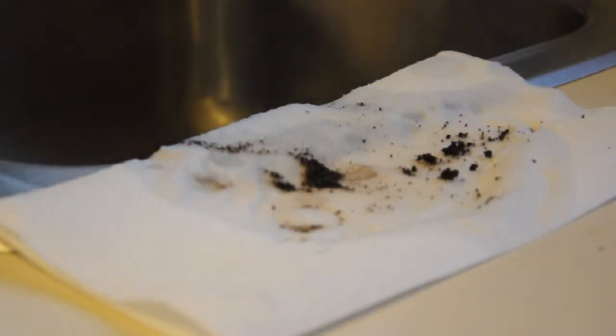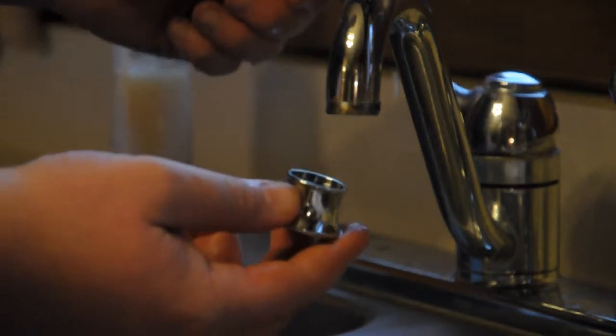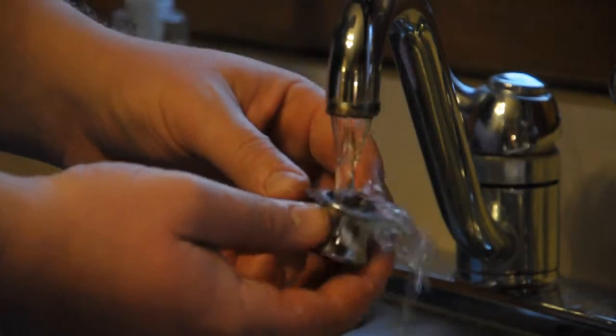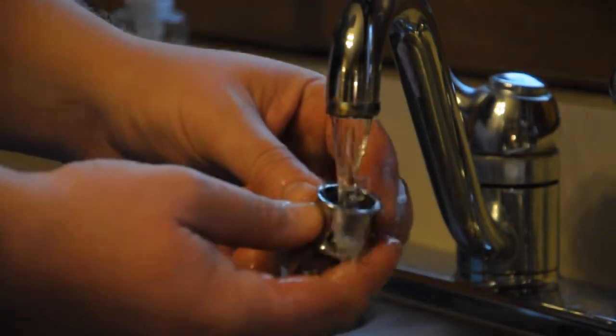Now rinse it. You want to do this part very slowly, so the water pressure doesn't knock the aerator out of your hand and down the sink.